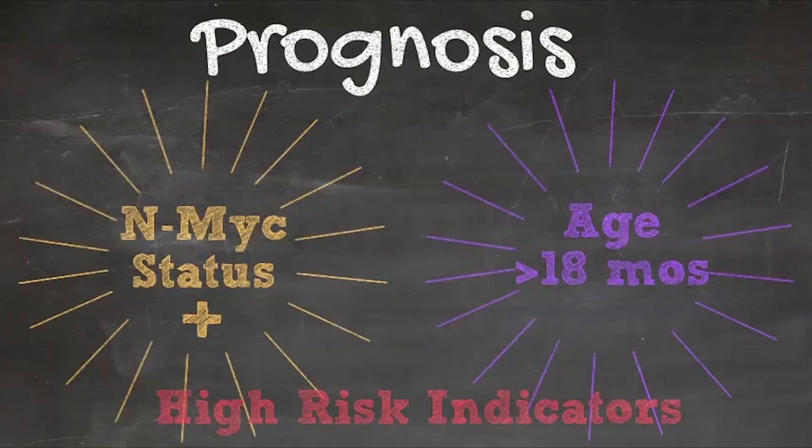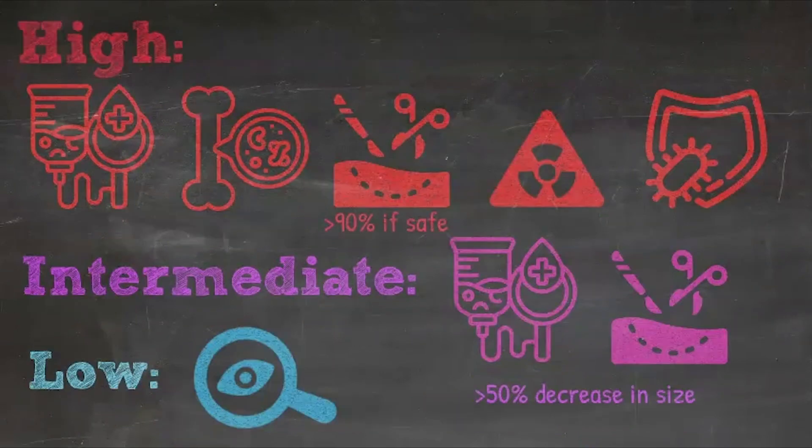NMYC amplification and age greater than 18 months are poor prognostic factors. Treatment is based on risk. Low risk: operate or observe, age depending. Intermediate risk: chemotherapy and a more limited surgical resection. High risk: neoadjuvant chemo, surgery, radiation, peripheral stem cell transplant, and immunotherapy.